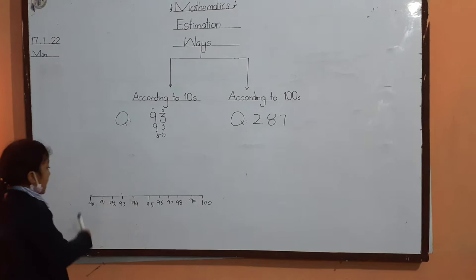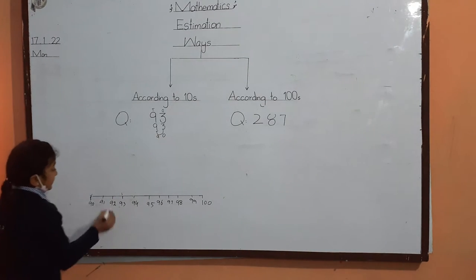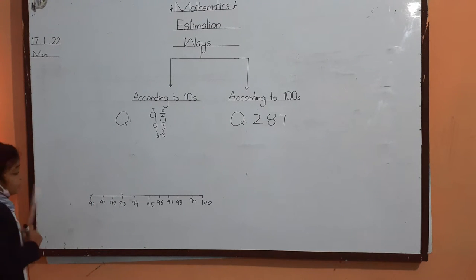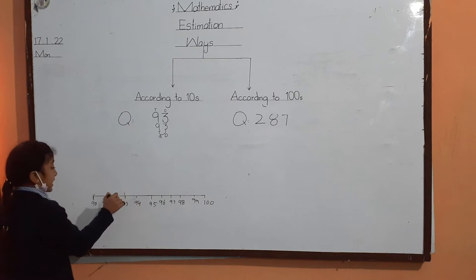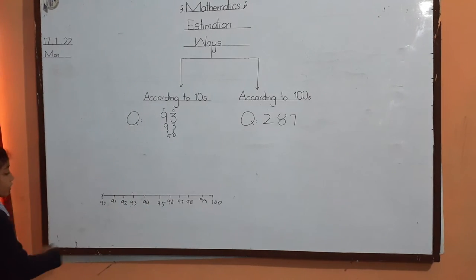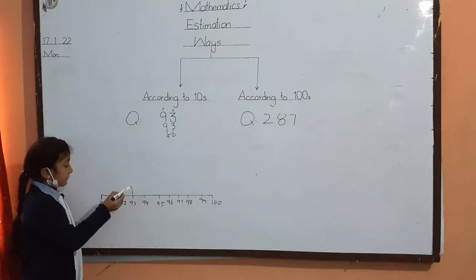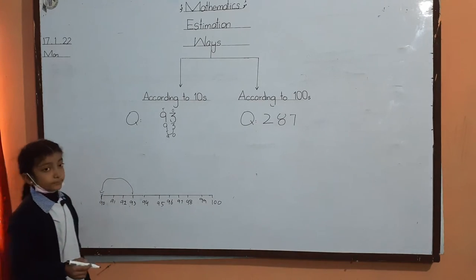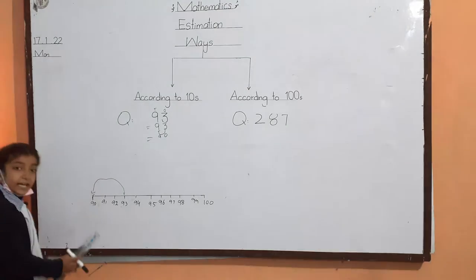Ninety. Now we write the number 9. This is our 93. And 93 is before 95. And from 93 to 90, we will place an arrow. Ninety-three's estimated value is 90.